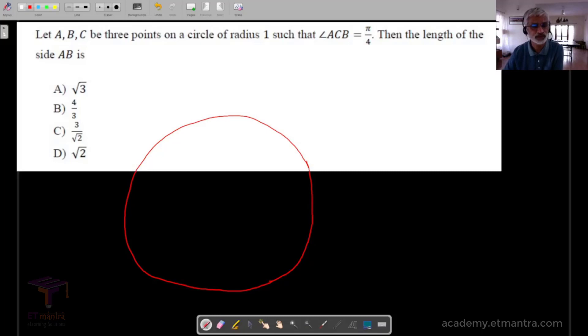This particular problem is rather simple. You have three points in a circle A, C, and B, and it is given that angle ACB is equal to π/4. One usually takes the central angle. This is the most famous theorem in basic geometry, and the central angle happens to be double of the inscribed angle, which is π/2.